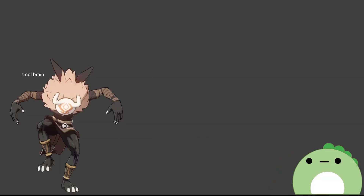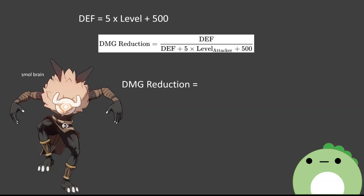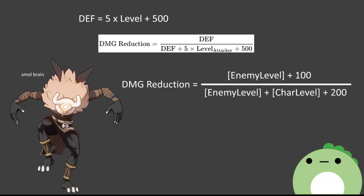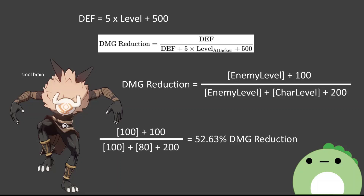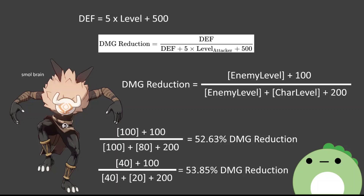Defense is calculated pretty easily, but the formula is different for enemies. Because enemies don't have unique defense values per enemy type — a Hilichurl and an Abyss Mage aren't going to have inherently different defense values. Instead, each enemy has a defense equal to five times their level plus 500. So if they're both level 10, they both have a defense value of 550. Substituting this into the damage reduction equation, we get enemy damage reduction equals the sum of their level and 100 divided by the sum of their level, the character level, and 200. Therefore, damage dealt to an enemy in regards to defense is completely dependent on the two individuals' levels. The higher the level, the less the level difference actually matters.